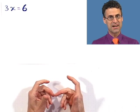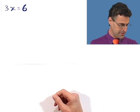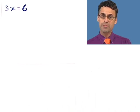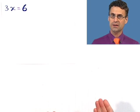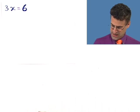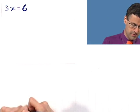3x equals 6. Not that difficult, we know exactly what to do. We divide both sides by 3. So we basically are going to perform an operation and what happens? Well we see this.